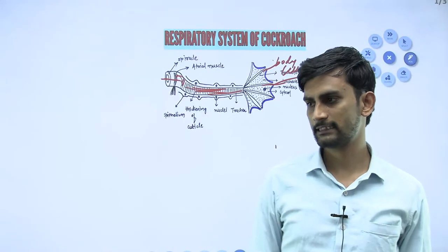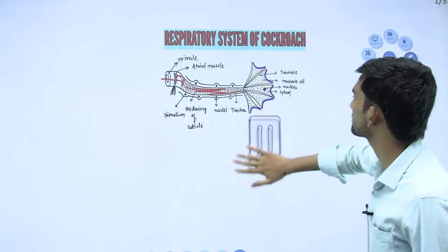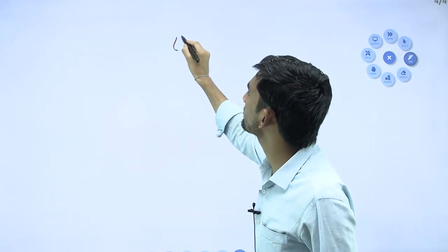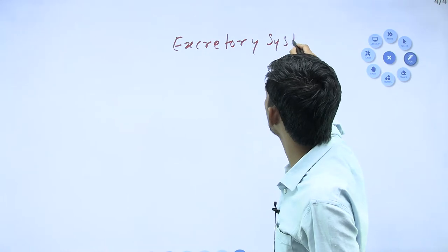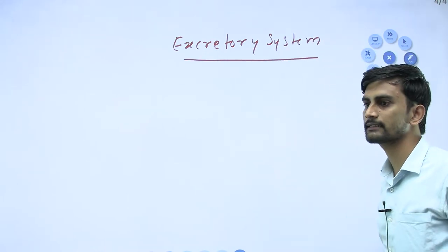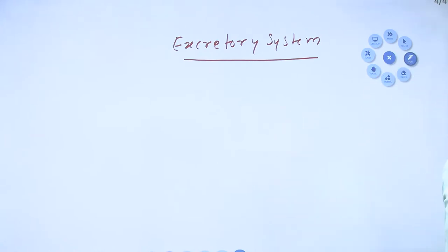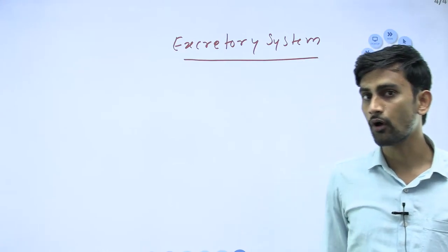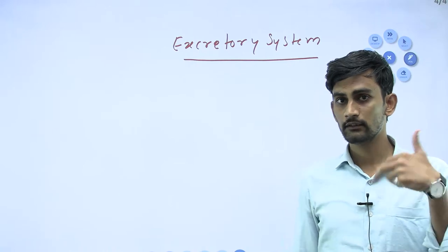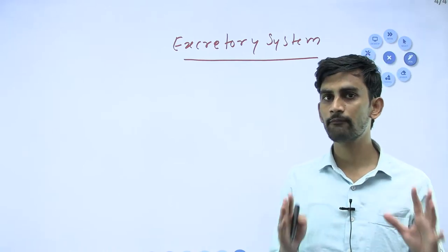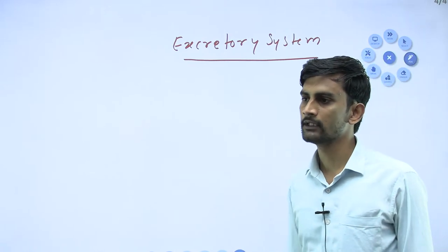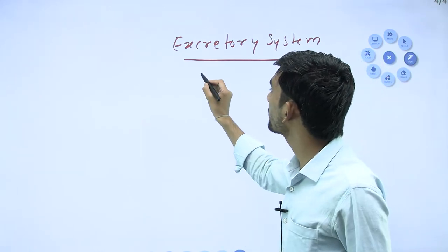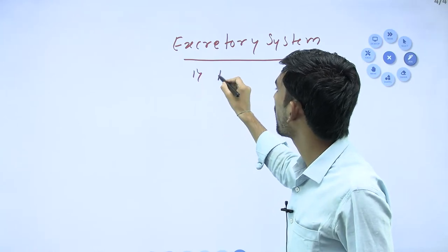After the respiratory system, we will start with the excretory system. We have now completed three systems: digestive, circulatory, and respiratory. The fourth system is the excretory system. The main excretory organs are called Malpighian tubules.